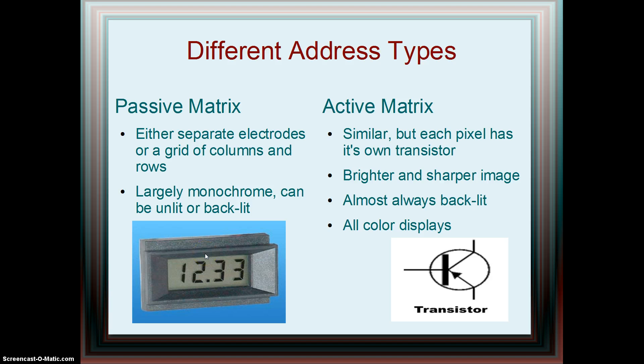Active matrix LCDs are very similar but each pixel using the grid of columns and rows has its own transistor. Transistors are basically just switches that use electricity to be switched on and off. These switches allow each pixel to be more accurately switched on and off by the display and allow the pixels to remain in their state through each refresh cycle.